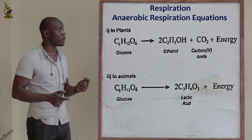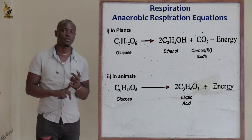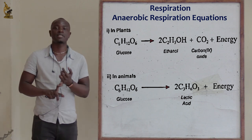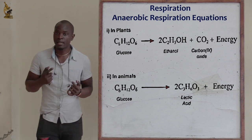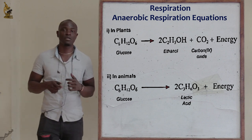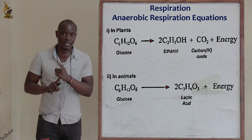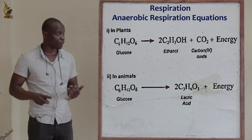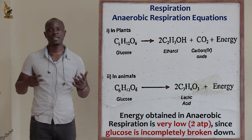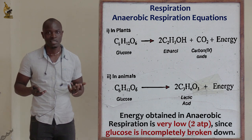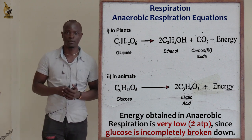In plants, we are going to produce ethanol, carbon dioxide, and energy. In animals, glucose will be incompletely broken down to produce lactic acid and energy. The energy obtained here is very low because glucose was incompletely broken down.